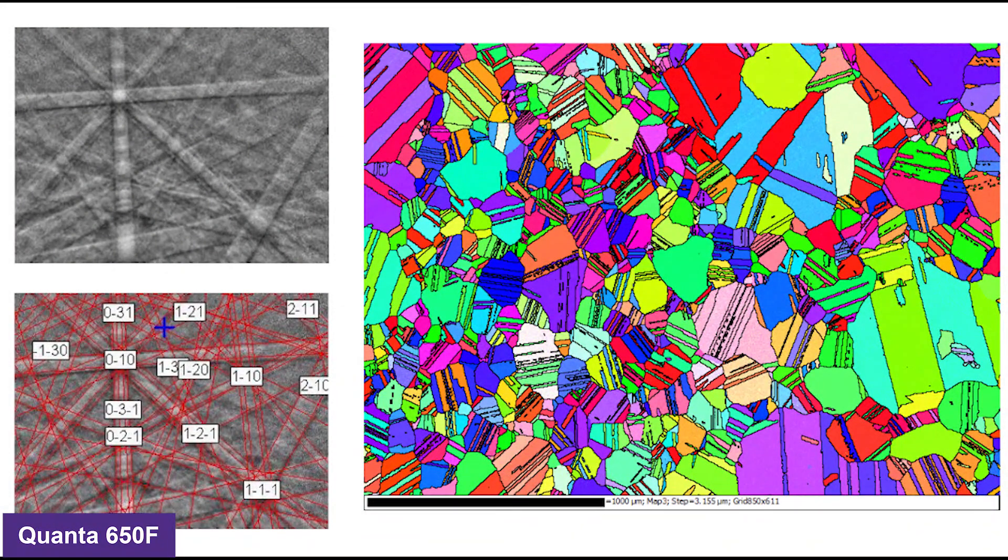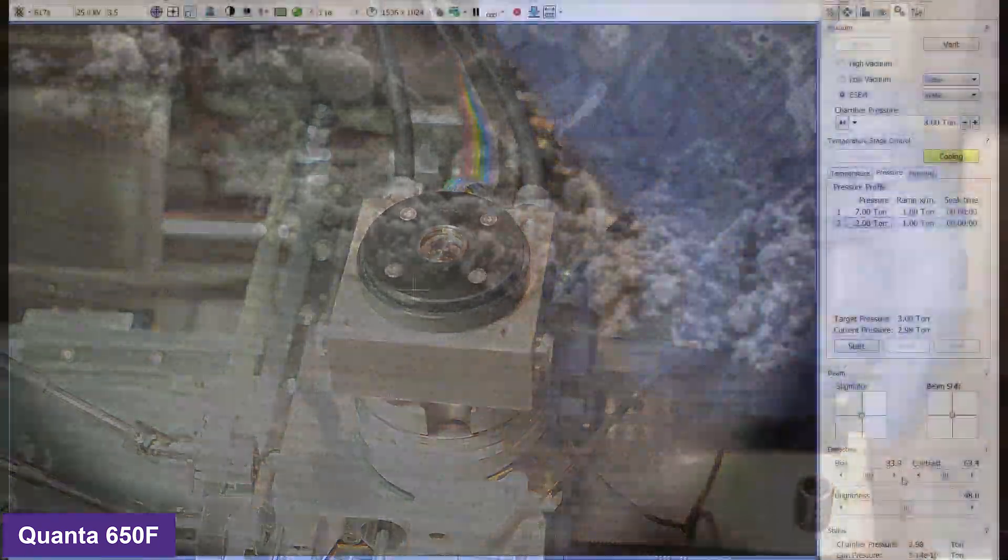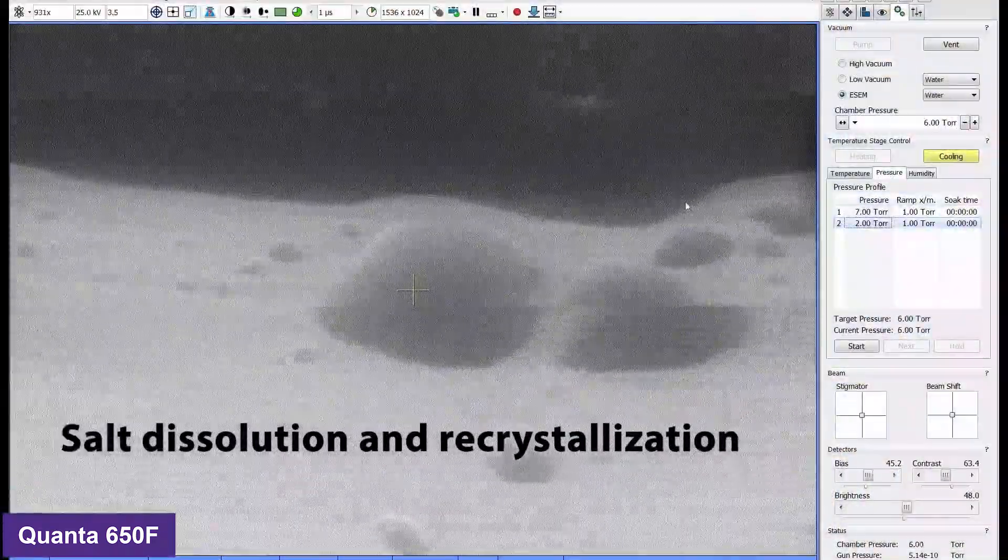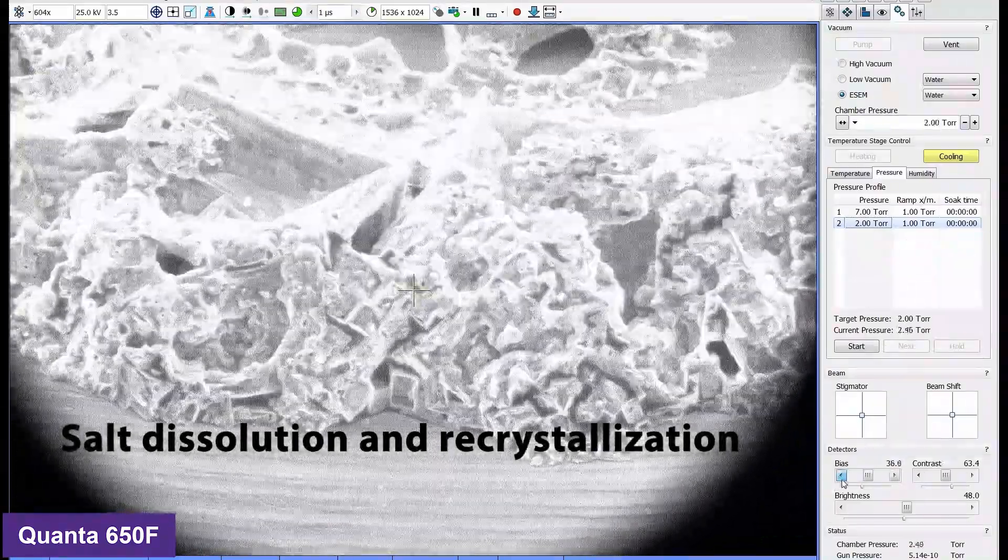The QUANTA also has an electron backscatter diffraction detector, or EBSD detector. This detector gives you crystallographic information about the microstructures in the sample. And finally, this SEM has a Peltier cooling stage, which allows you to cool your sample down to 10 degrees C. With water vapor present in the chamber, this allows you to condense water on the surface of your sample.